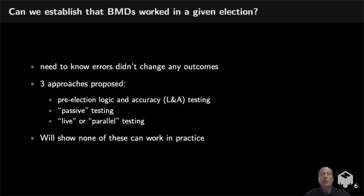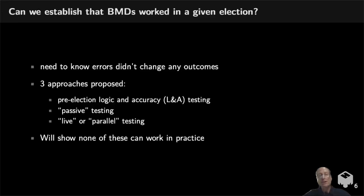How can we figure out whether ballot marking devices actually worked adequately in a given election? We need to know that whatever errors occurred weren't numerous enough to change the outcome of any contest. Three different approaches have been proposed: pre-election logic and accuracy testing, where you run test patterns through a machine before election day and verify it prints the right thing; passive testing, where you look at spoiled ballot rates and try to detect anomalously high rates as a signal of misbehavior; and parallel or live testing, where testers periodically mark ballots and verify the printout matches their intent. The point of our research is to show that none of these can work in practice.